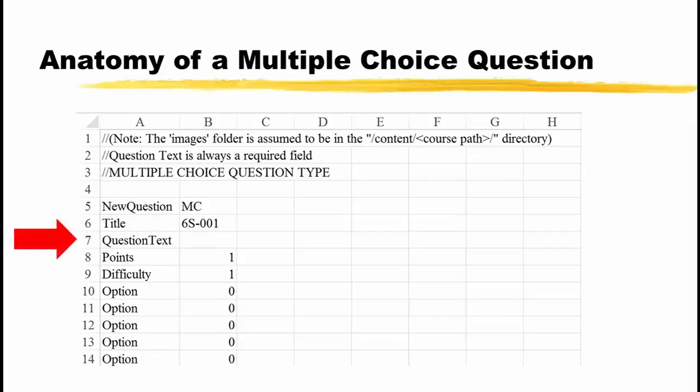Here, we see the word title in A6 and a title entered in B6, just as before. Here, the word QuestionText, as one word is entered in cell A7, and the actual text of the question would be entered beside it in cell B7. Cells A8 through B9 have the terms point and difficulty, as well as their value. These function identically to true-false questions.